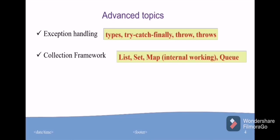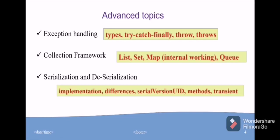Here about list, set, map, and mainly the internal working of HashMap, HashSet like that. Then queue, serialization and deserialization. Here about the implementation of them, then differences between serialization and deserialization, about serial version UID and what are the methods available in that.